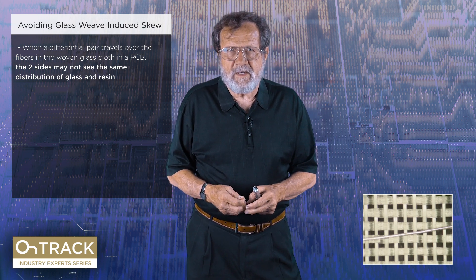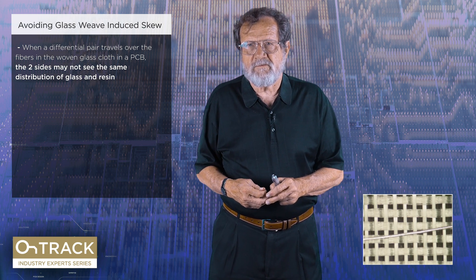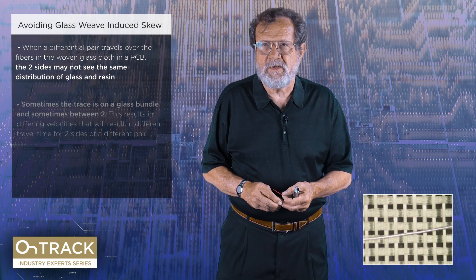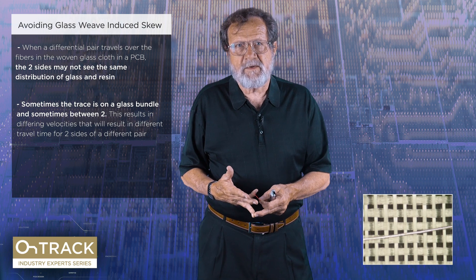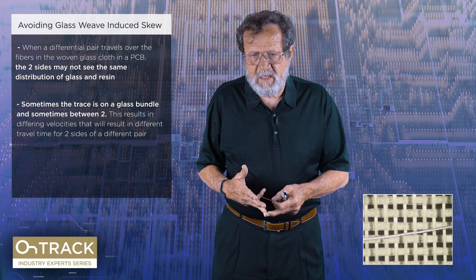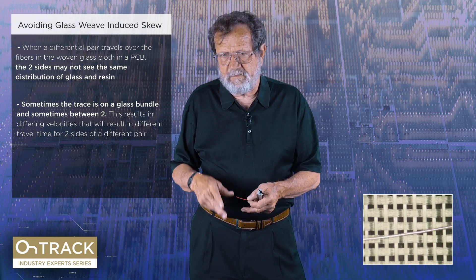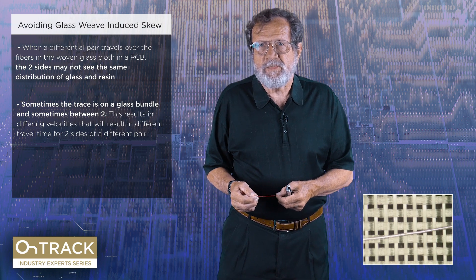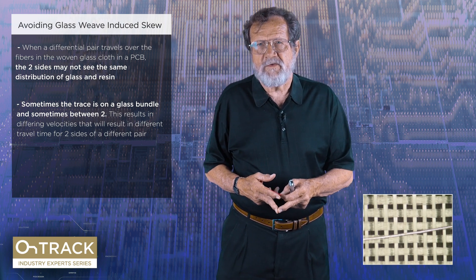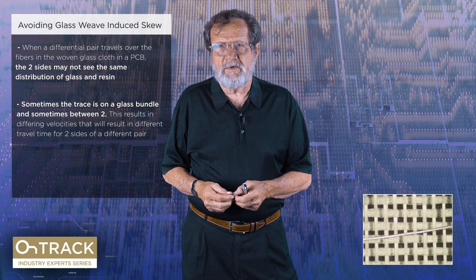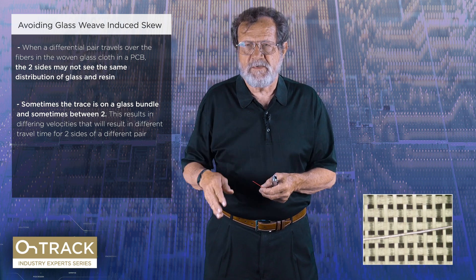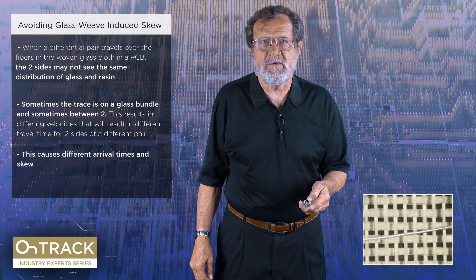The E sub R of glass is around six; the E sub R of resin is around three. If you notice, a trace is first on top of a glass bundle and then in between two — one ought to expect a couple of things to happen. Where the E sub R is high, we should have a lower impedance; where it's low, we should have a higher impedance — and that's true, we get a variation in impedance. We also get a variation in travel velocity, because when E sub R goes up, velocity goes down. With a single-ended signal you don't notice that, but with a differential pair, if they don't exhibit the same ups and downs, one signal will get there before the other — that's skew.